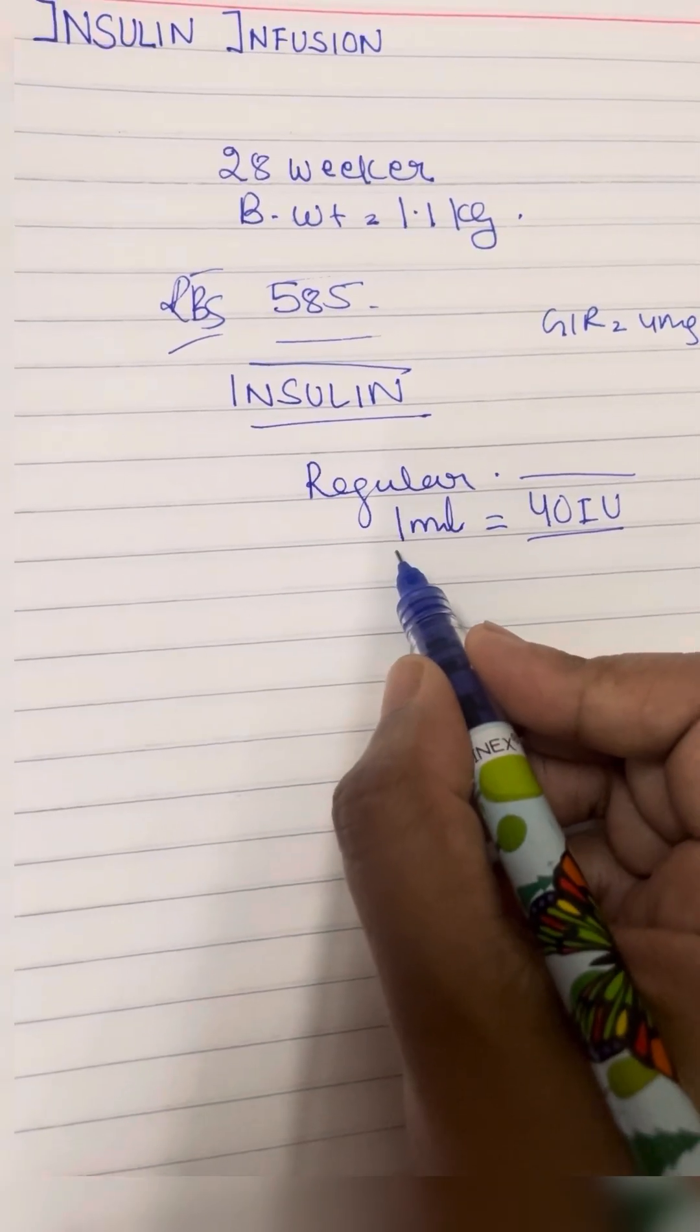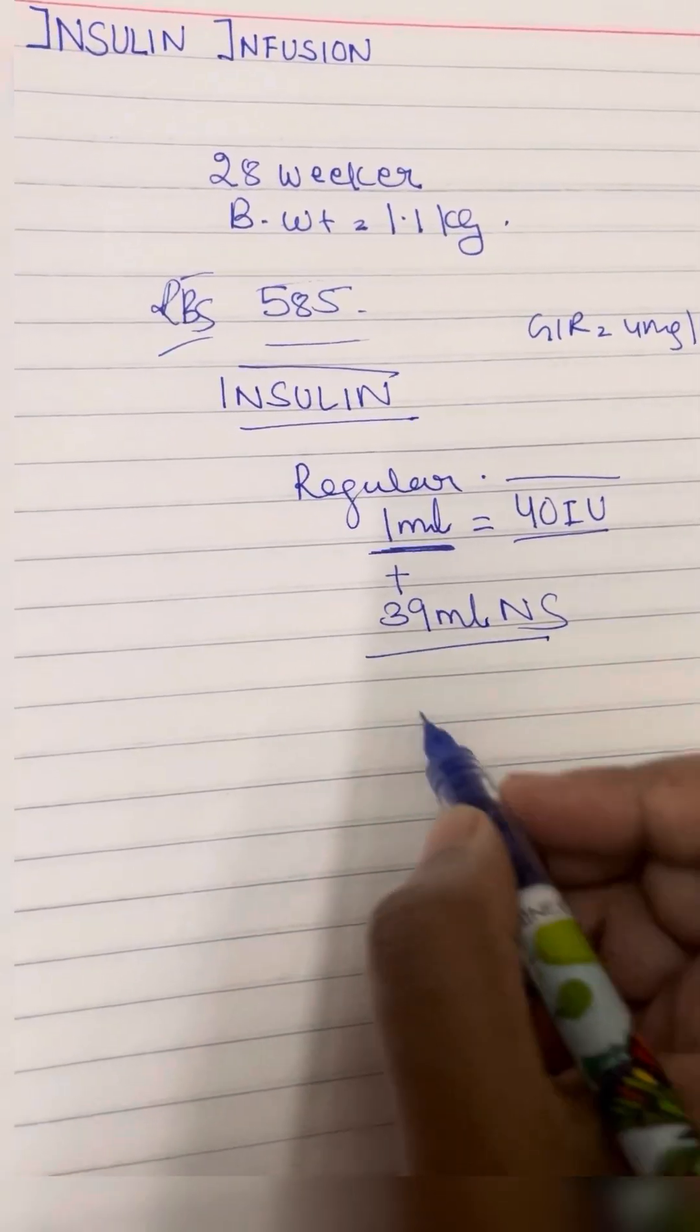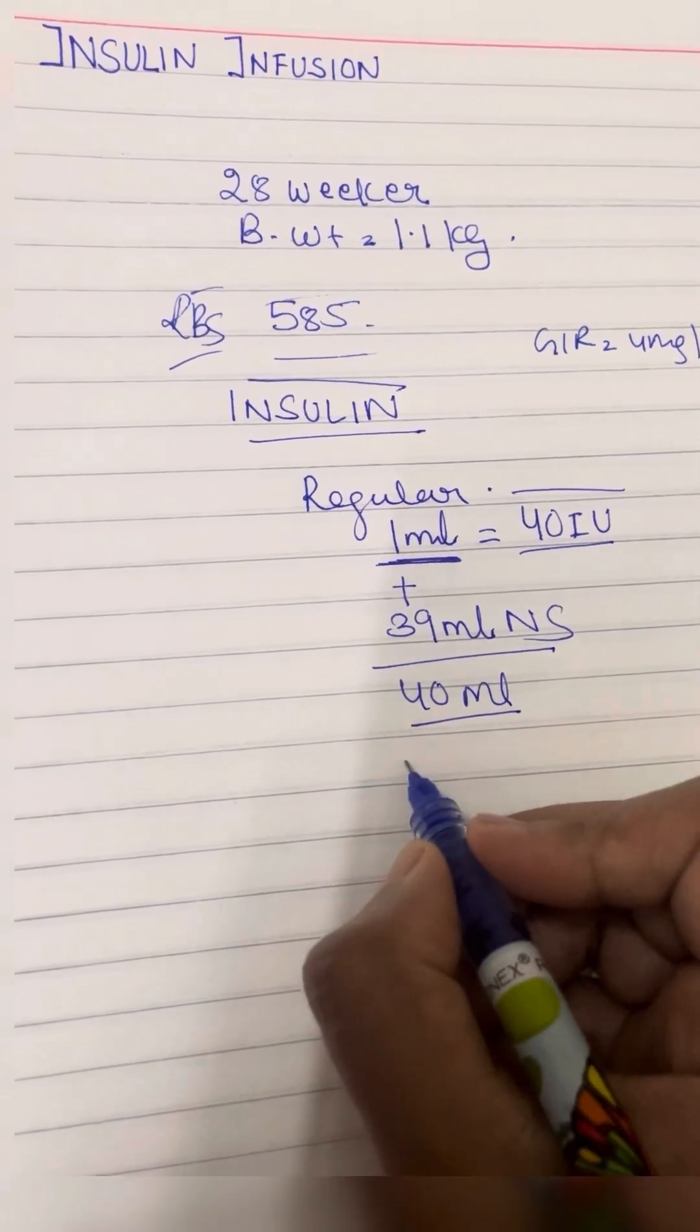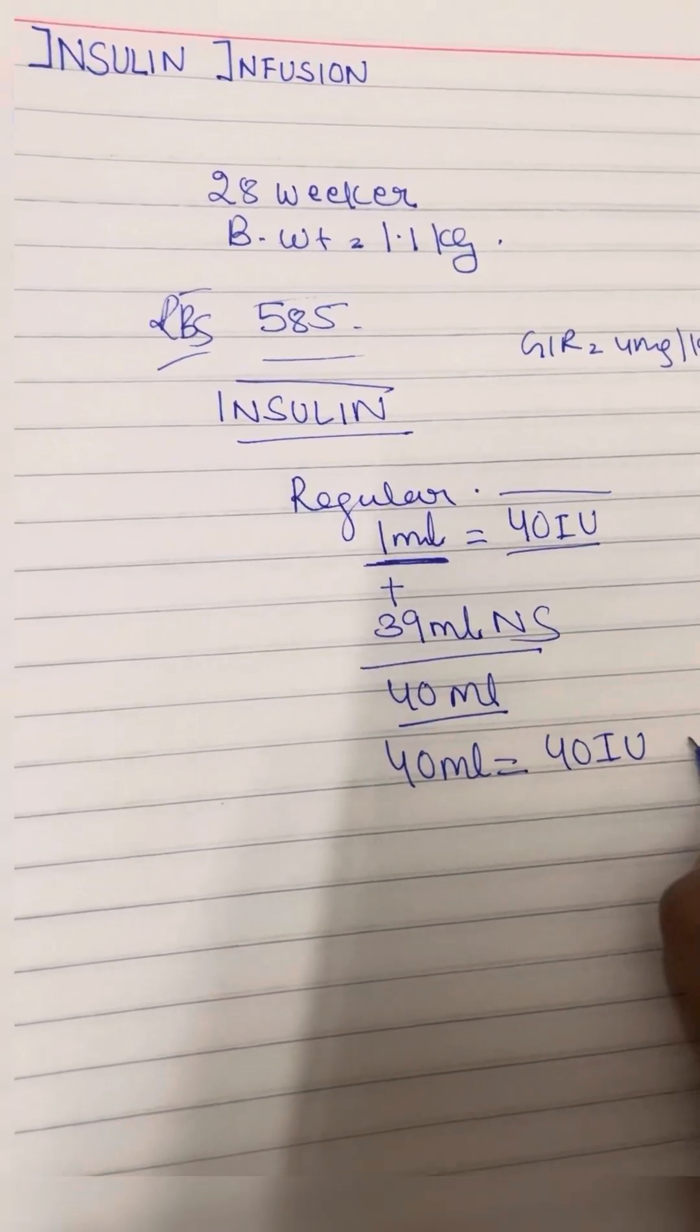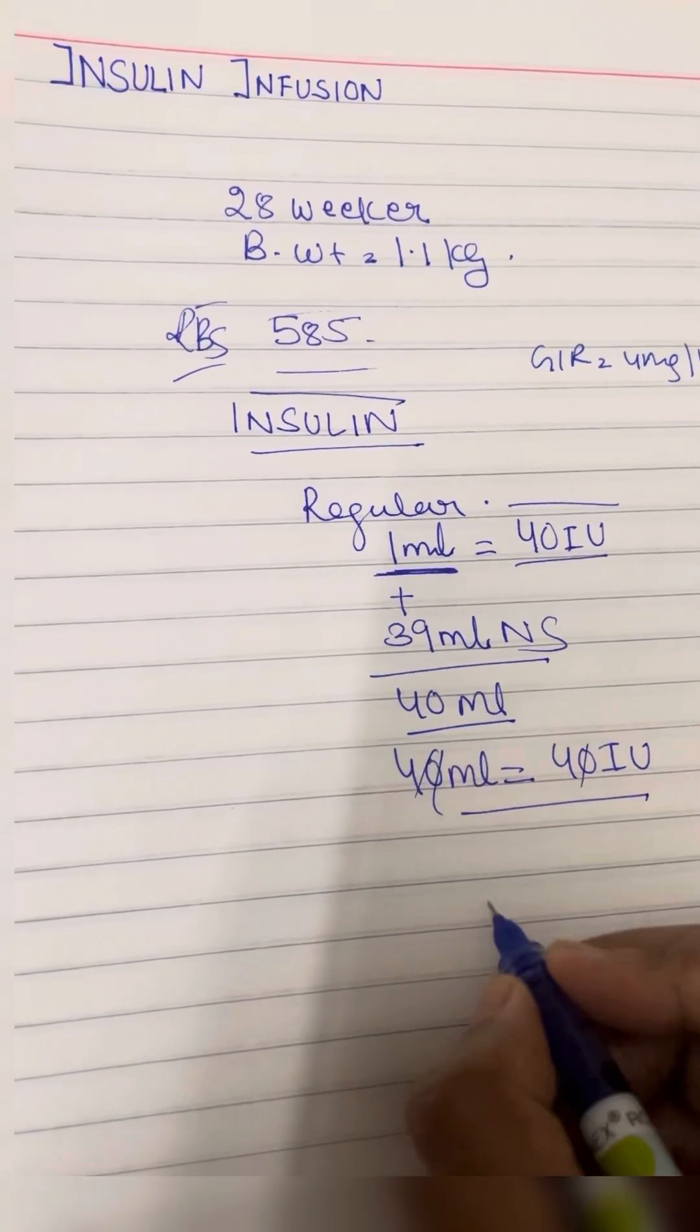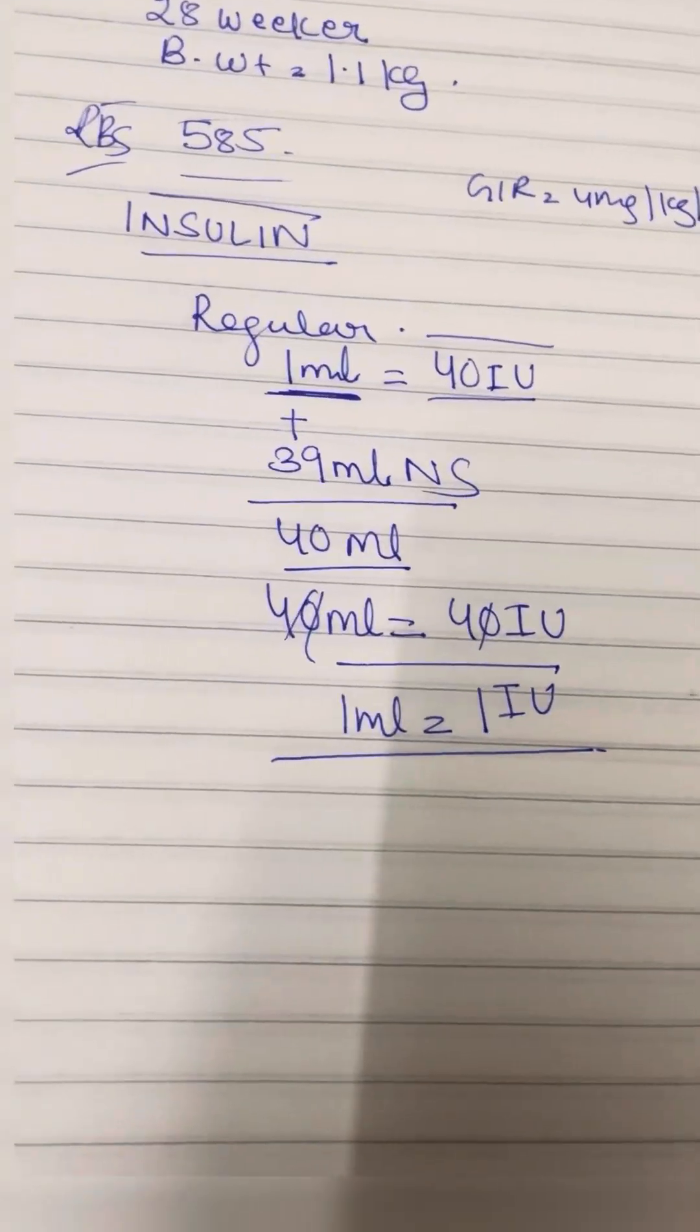What I'll do is this already has 1 ml, so I'll dilute this in 39 ml of normal saline. So it becomes 40 ml in total, and this 40 ml has 40 international units of insulin. That means 1 ml is equal to 1 international unit of insulin.